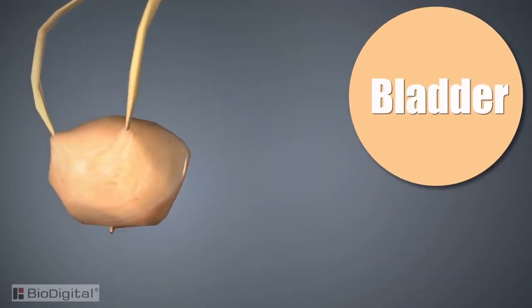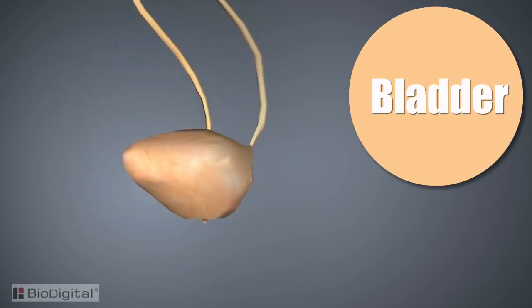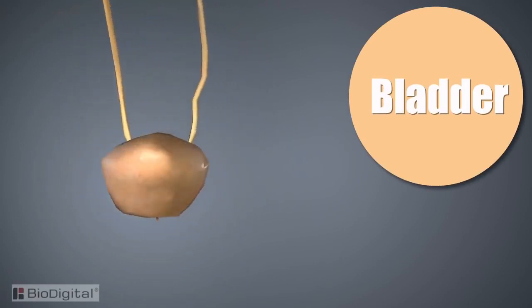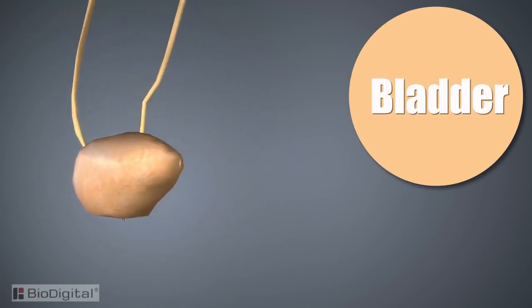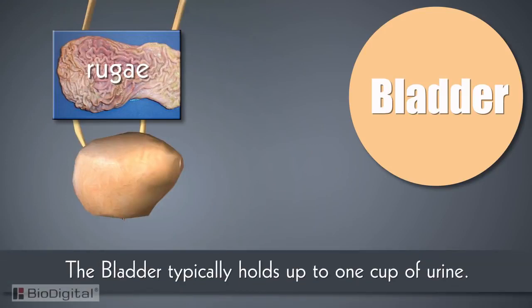The bladder is a hollow sac, much like the stomach, lined by a series of folds called rugae. The purpose of these folds is to allow the bladder to expand as urine is collected. The bladder typically holds up to one cup of urine — and sometimes more — until the urge to void or urinate is triggered.